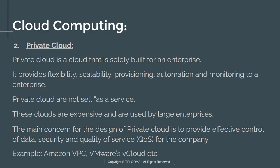The private cloud is designed for enterprise use or for the use of a specific company. It provides flexibility, scalability, provisioning automation, and monitoring to an enterprise. Private clouds are not sold as services — they are only used by large enterprises because they are expensive. The main concern for private cloud design is to provide effective control of data security and quality of service. Examples include Amazon VPC and VMware vCloud.